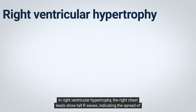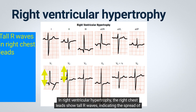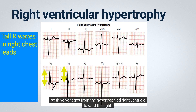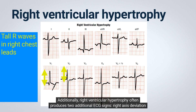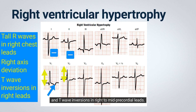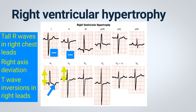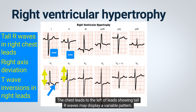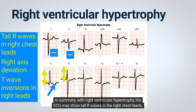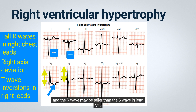In right ventricular hypertrophy, the right chest leads show tall R-waves, indicating the spread of positive voltages from the hypertrophied right ventricle toward the right. Additionally, right ventricular hypertrophy often produces two additional ECG signs: right axis deviation and T-wave inversions in right to mid-precordial leads. The chest leads to the left of leads showing tall R-waves may display a variable pattern. With right ventricular hypertrophy, the ECG may show tall R-waves in the right chest leads, and the R-wave may be taller than the S-wave in lead V1.